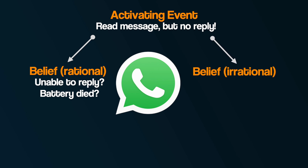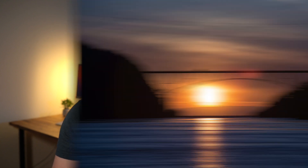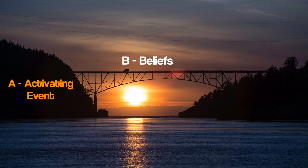On the other hand, in the case of someone suffering from depression, they may interpret the same event irrationally — the blue ticks of death could lead them to think their boyfriend or girlfriend is off with someone else, and the next message they receive might be one telling them they've been dumped. It is these irrational thoughts that lead to the third part of Ellis' ABC model: C — Consequences. This relates to the negative feelings and behaviours that result from the negative beliefs. Beliefs are thought to be a connecting bridge between the activating event and the consequences.